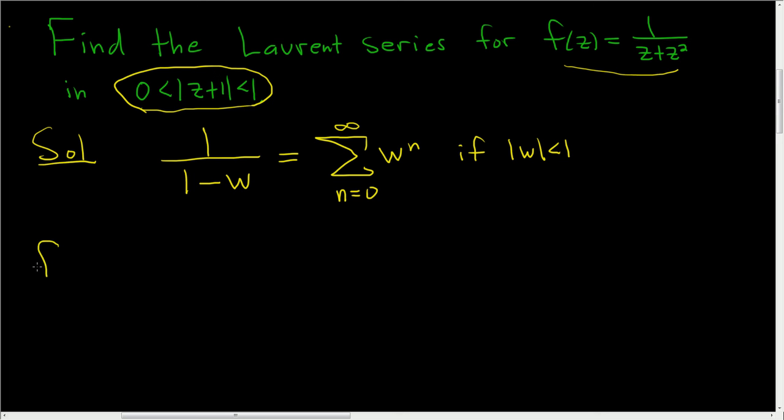Let's do it all at once. So f of z is equal to 1 over z plus z squared. And the trick is to write down what you want. Now before we do that, it might make it easier if we factor out a z. So 1 plus z.